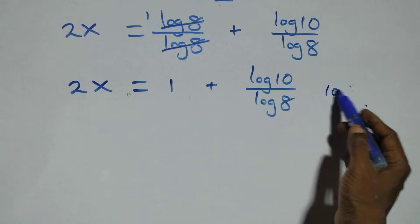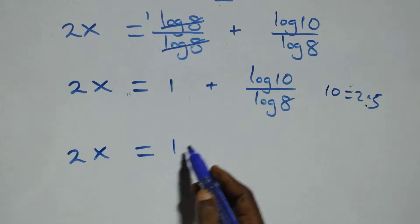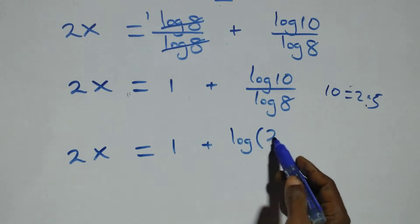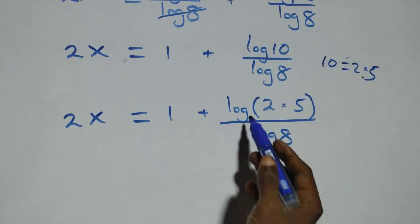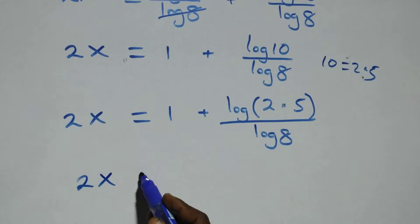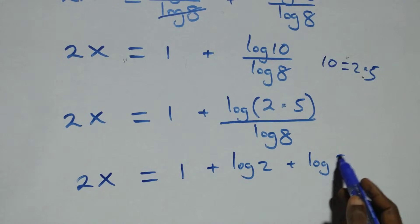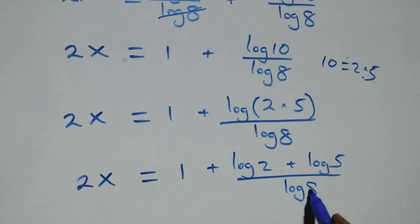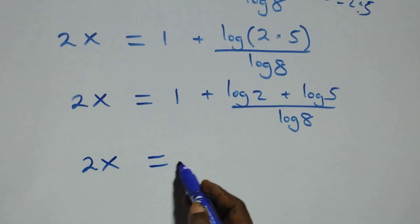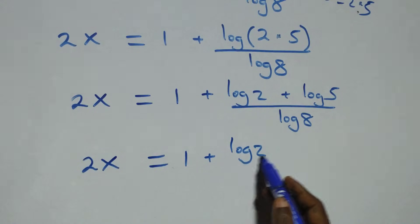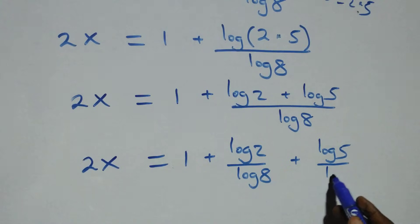Then from here, 10 can be expressed as 2 times 5. So this becomes 2x equals to 1 plus log(2 times 5) over log 8. Applying the law of logarithms again, we have 2x equals to 1 plus log 2 plus log 5 over log 8. Separating into two fractions: 2x equals to 1 plus log 2 over log 8 plus log 5 over log 8.